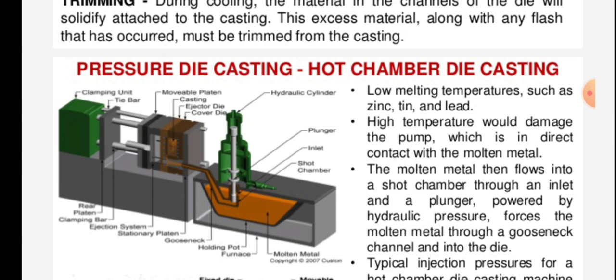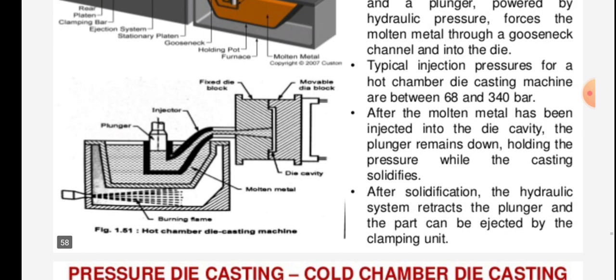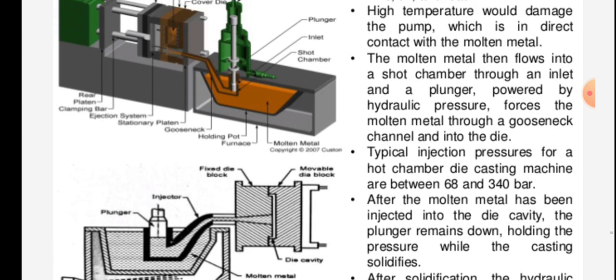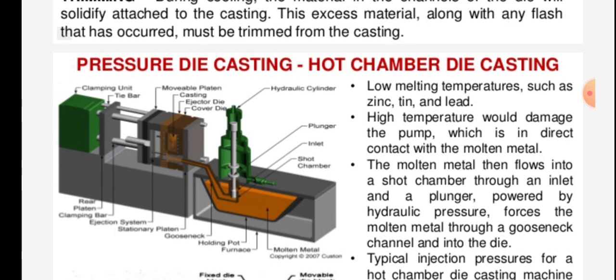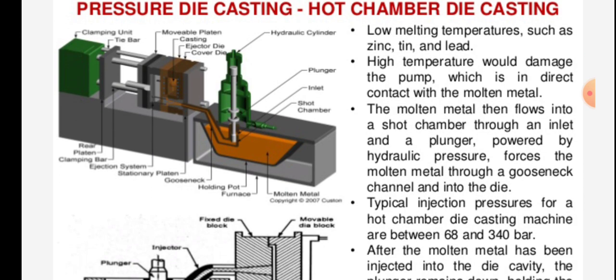Pressure die casting: hot chamber die casting is shown in the figure. This process is used for low melting temperatures such as zinc, tin, and lead. High temperatures would damage the pump, which is in direct contact with the molten metal. The molten metal flows into a short chamber through an inlet.